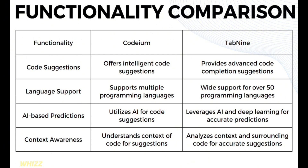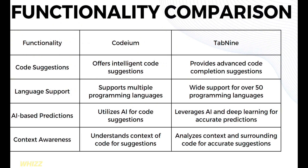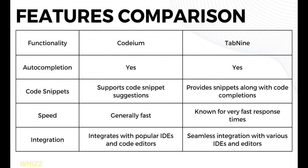In terms of context awareness, Codium understands the context of code for suggestions, while Tab9 analyzes the context and surrounding code for accurate suggestions. In terms of features comparison, both Codium and Tab9 offer auto-completion functionality. For code snippets, Codium supports code snippet suggestions, while Tab9 provides snippets along with code completions. In terms of speed, Codium is generally fast, while Tab9 is known for very fast response times and rapid generation of code completions. For integration, Codium integrates with popular IDEs and code editors, while Tab9 offers seamless integration with various IDEs and editors.